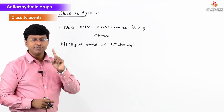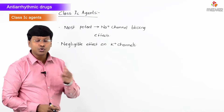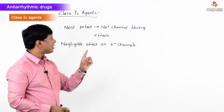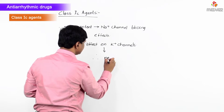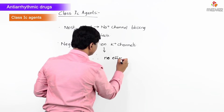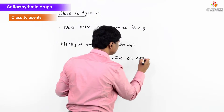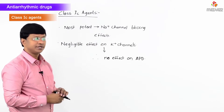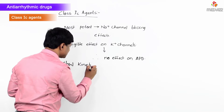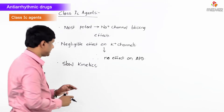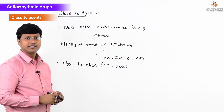Because Class 1C agents have negligible effect on the potassium channels, there is no effect on the action potential duration. Additionally, these Class 1C agents have slow kinetics — more than 10 seconds.